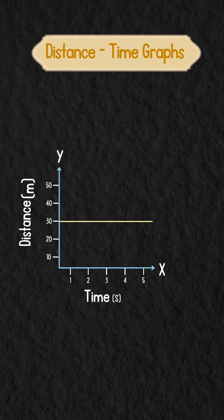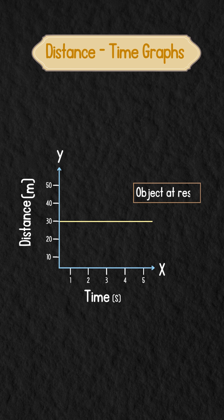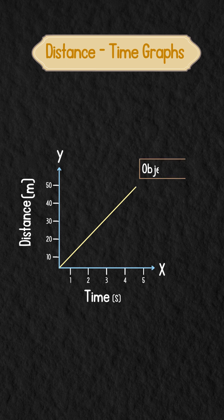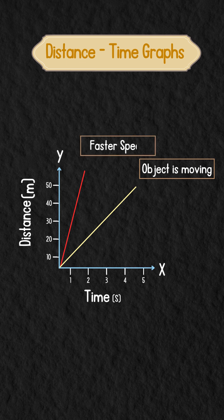A horizontal line means the object is at rest, that is no movement over time. If the line slopes upward, the object is moving, and the steeper the line, the faster the speed.